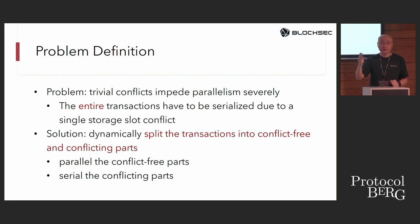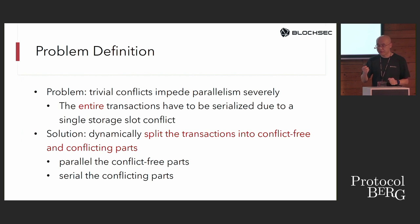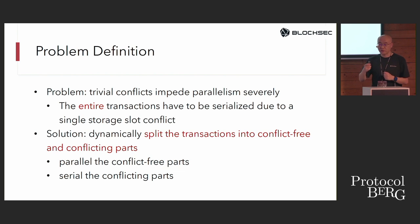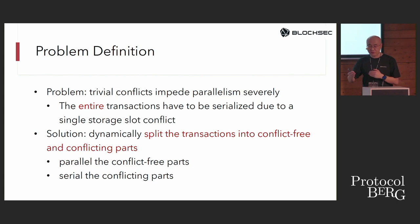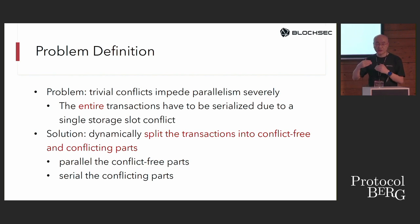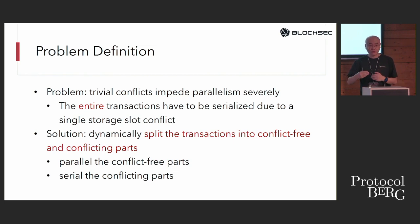The problem with traditional parallelism algorithms is that the entire transaction must be serialized due to a single storage conflict. Our solution: dynamically split transactions into different types of operations, parallelize the conflict-free parts, and serialize only the conflicting parts. By doing so, we don't have to re-execute whole transactions when a conflict happens.